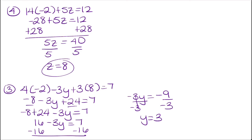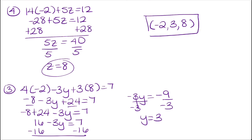Now I can write my solution as an ordered triple: (negative 2, 3, 8). That is the solution to this system of equations.